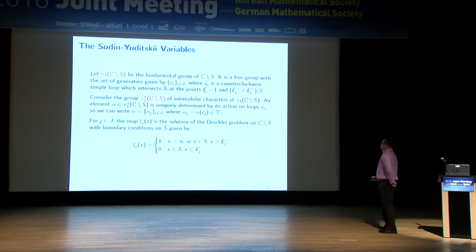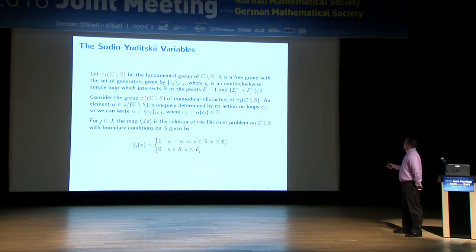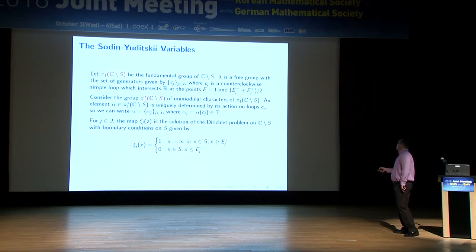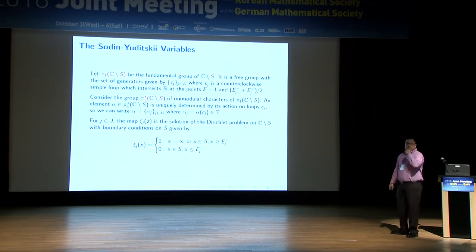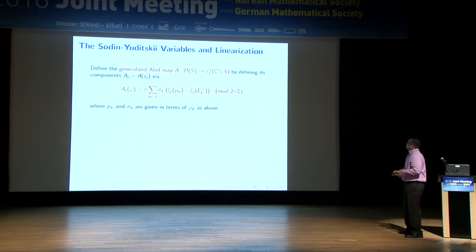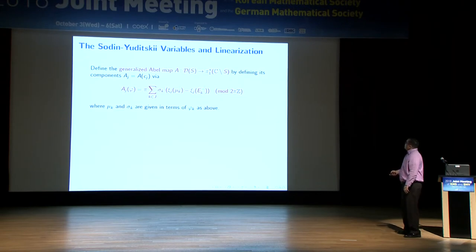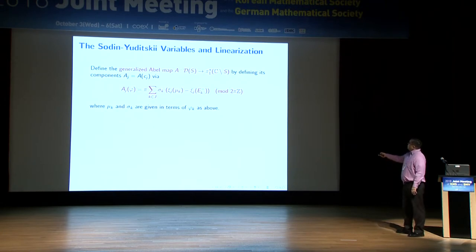You define a family of harmonic functions called omega_j: harmonic away from the spectrum S, equal to zero below the j-th gap and equal to one above the j-th gap. That defines the function omega_j. The generalized Abel map can then be written down explicitly using these functions and the signs associated with the elements.